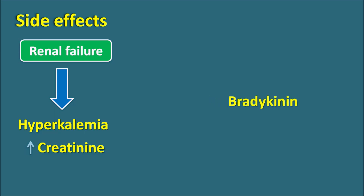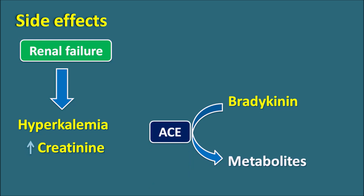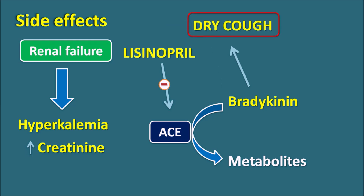The second important side effect is related to bradykinin. Bradykinin is normally converted into its metabolites by an enzyme with ACE-like activity. Lisinopril can inhibit this ACE enzyme activity, thereby inhibiting the conversion of bradykinin into its metabolites, resulting in accumulation of bradykinin within the plasma. When bradykinin levels increase, it produces effects like dry cough — one of the important side effects of Lisinopril — as well as vasodilation and edema, leading to angioedema.